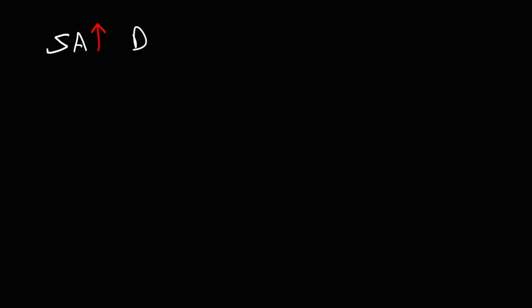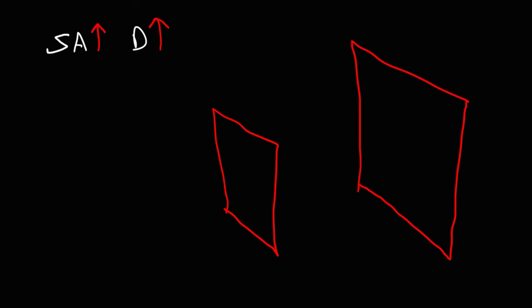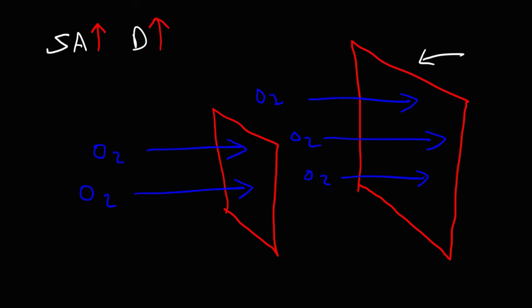The next factor that influences the rate of diffusion is surface area. As the surface area of the cellular membrane increases, the rate of diffusion will increase, because there's more area through which the gas particles can flow. The first object has less surface area than the second object, so fewer gas particles can flow through the first. But the second one, because it has greater surface area, allows more gas particles to flow through — giving it a higher rate of diffusion.